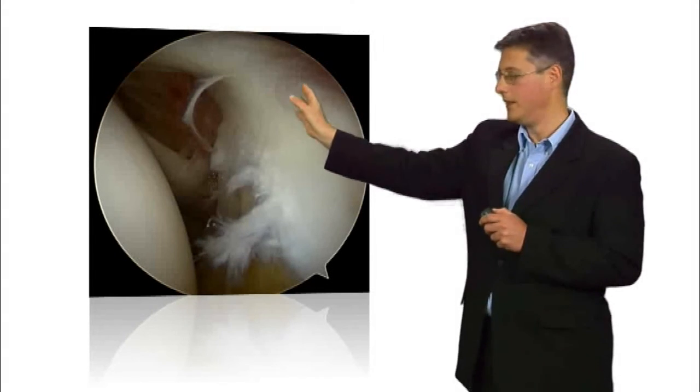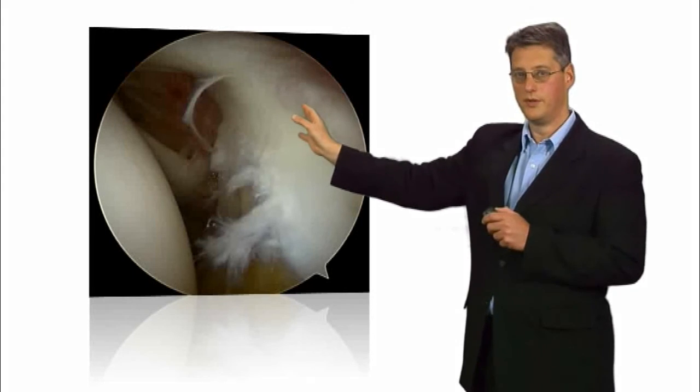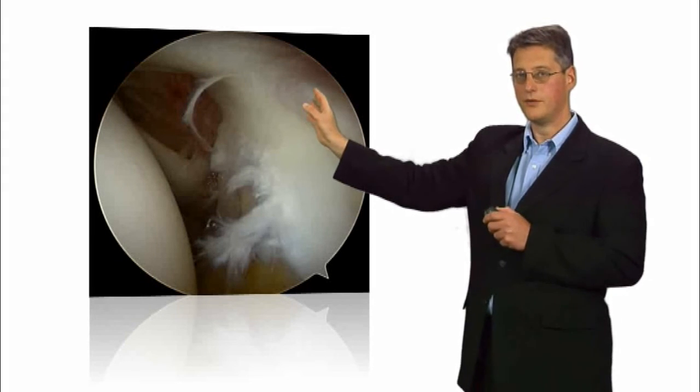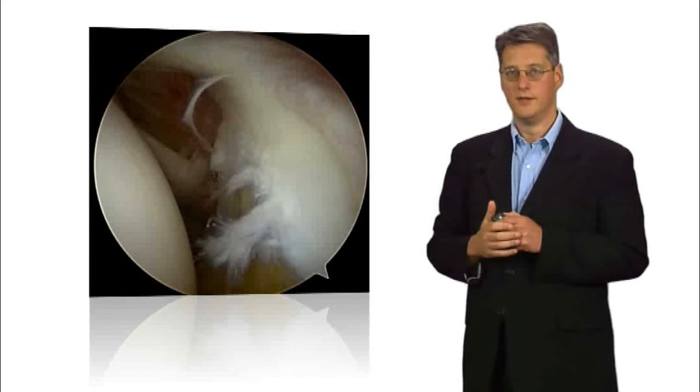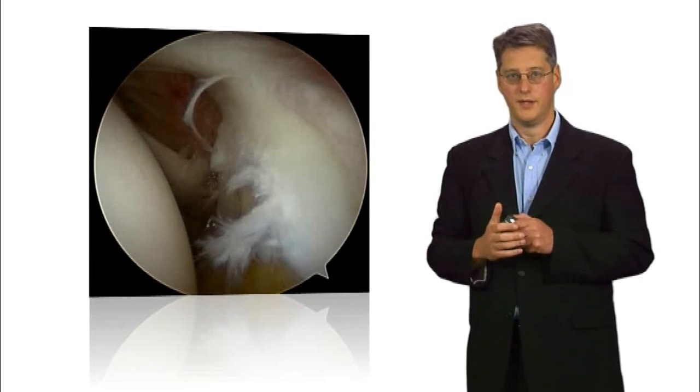You can see the humeral head which is the ball of the ball and socket joint to my far right and the tear is closer to me over here at the top of the glenoid labrum.